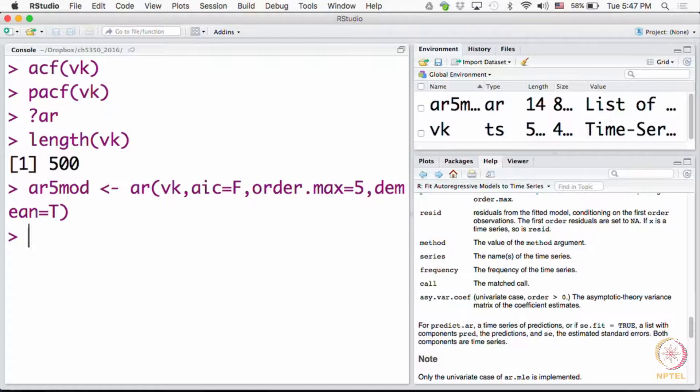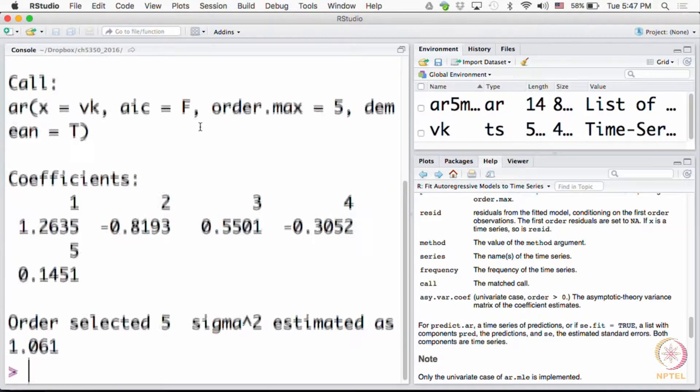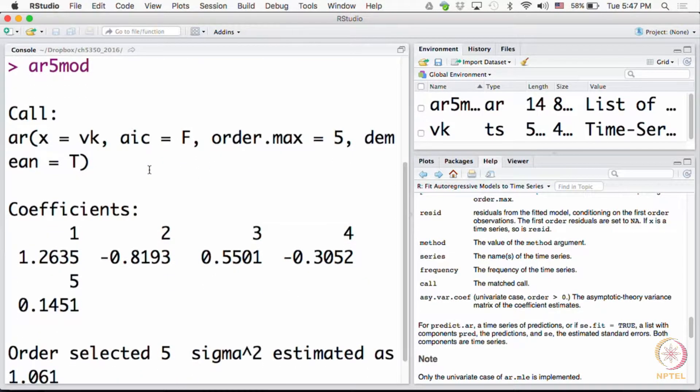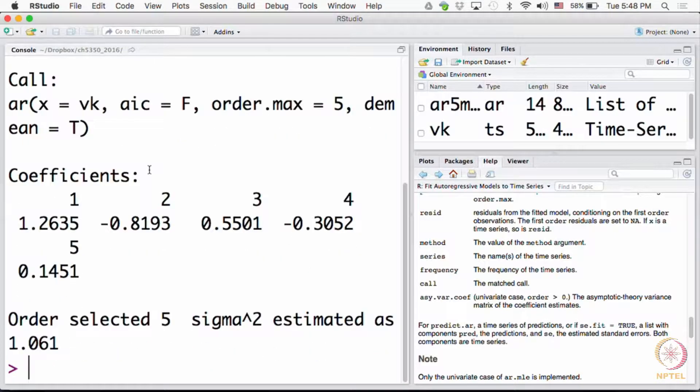I have estimated the model. Now I can actually ask for the model. These are the coefficients. I've just typed in the name of the object, the model object, and it shows what is the call that I've used. Just in case maybe I was typing with one eye closed, it's telling me what exactly you typed, don't blame me. It's a good check. The coefficients are given, estimates of d1 to d5, and the sigma squared e is also estimated for you, 1.061.